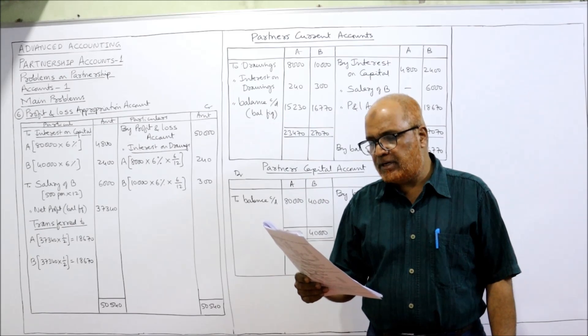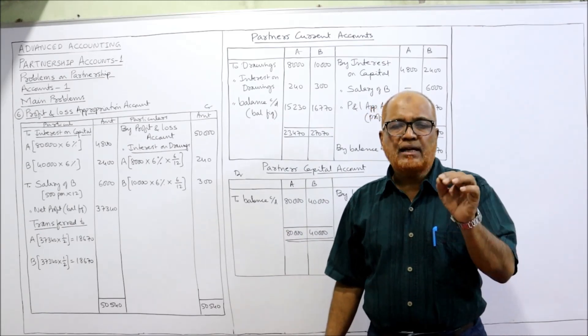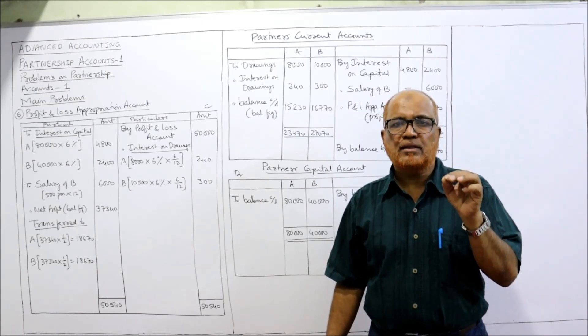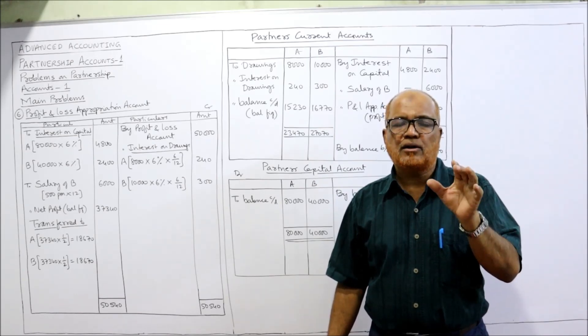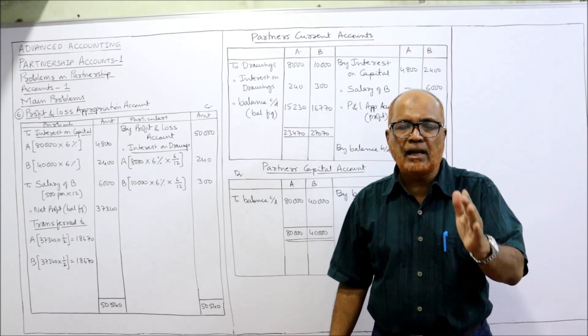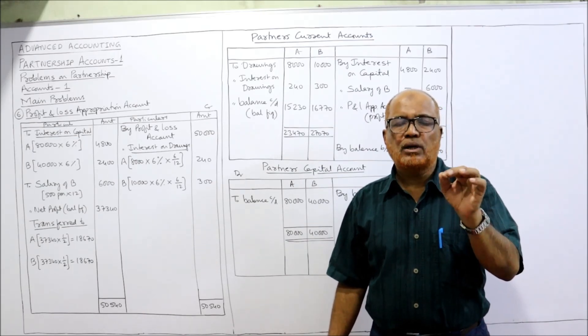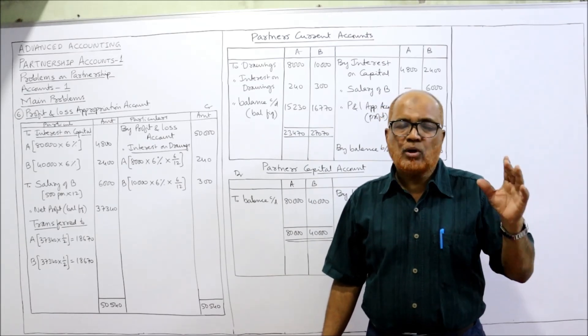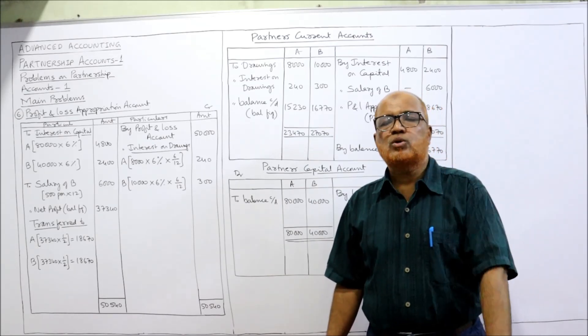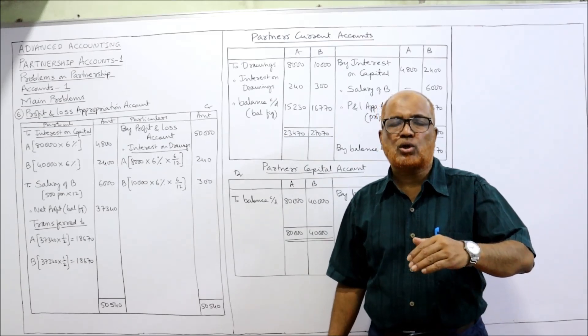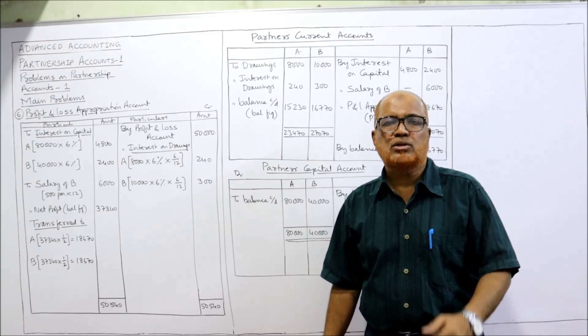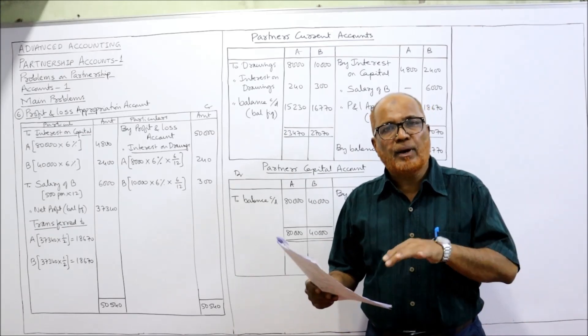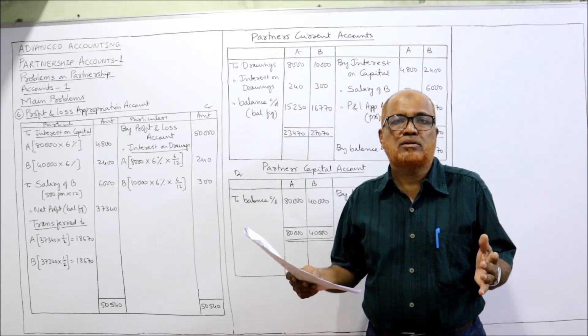During the year, A withdrew 8,000 and B withdrew 10,000. What is the date of drawings? Not given, so here we have to make the assumption that drawings are made in the middle of the year, so we calculate the interest only for six months. Previous problem we have not done because it was specifically given that interest on drawing will be charged for the whole year.